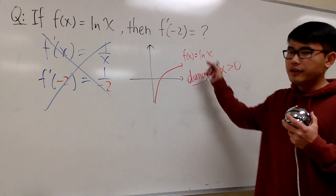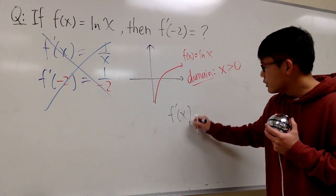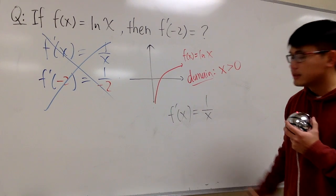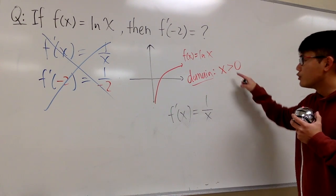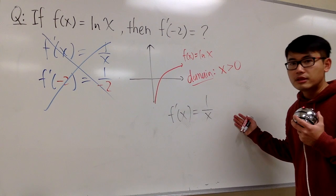And of course, once we differentiate ln x, we get f' of x, which is 1 over x. However, the domain has to stay the same, right?